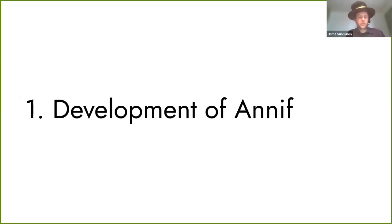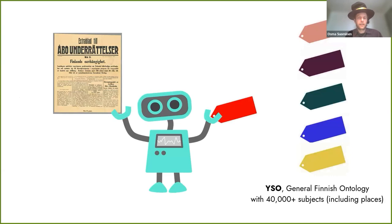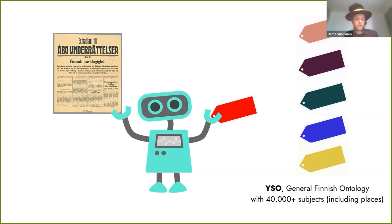Subject indexing is the process of assigning documents subjects from a controlled vocabulary such as a thesaurus or subject headings. At the National Library of Finland our main subject vocabulary is the general Finnish ontology YSO, which includes more than 40,000 subjects including places. Libraries like ours have very large collections of documents, so performing subject indexing is typically a very labor-intensive process, and it would help to have a tool that assists in this work.